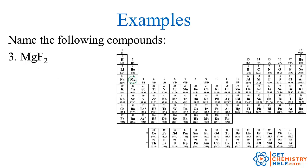MgF2: Mg is in group 2, so that means it's always 2+. So we don't need a Roman numeral, because it can only be one thing — no reason to say magnesium(II) since it can only be 2+. Then F as an anion: it comes from fluorine, and when nonmetals become anions they change to -ide. So the name is magnesium fluoride. Make sure when you spell it you put the U before the O — fluoride, not F-L-O-U-R-I-D-E.